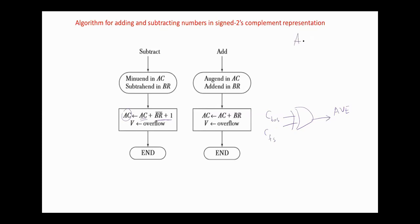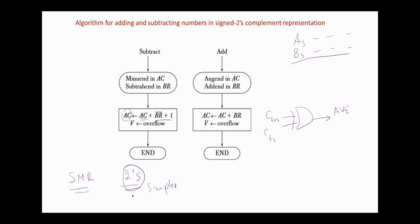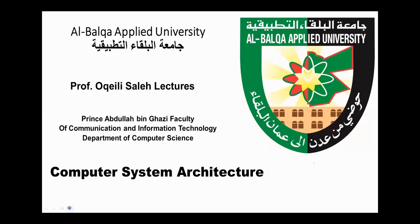Please remember that the sign bit here should participate in the operation of addition or subtraction as do all other bits in the magnitudes of the numbers. By comparing the operations with sign-magnitude representation and two's complement representation, we can note that using two's complement representation is much simpler. This is why most computers use the two's complement form. So, for today, that's all. Thank you.